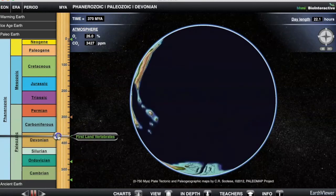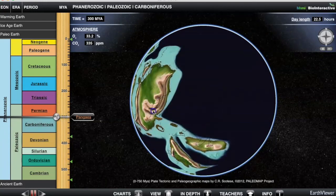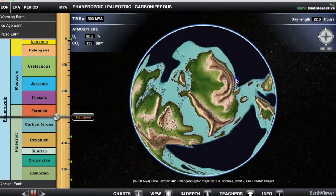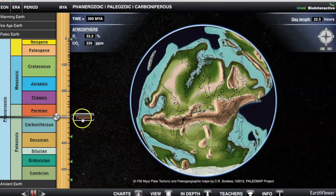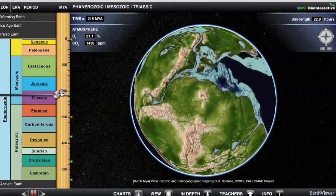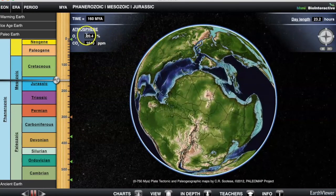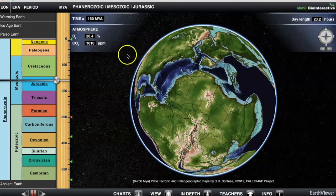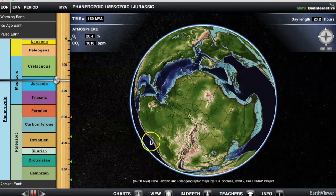First land vertebrates, about 370 million years ago. Pangaea, you've heard probably a lot about Pangaea, was forming about 300 million years ago. Here's Pangaea. Let's move up. Notice what's happening. Our oxygen is increasing in amount. Our carbon dioxide is going down. And our day length is getting longer. That's because our Earth was spinning faster in the beginning than it is now. Anyway, this is just a brief overview of the Earth Viewer.